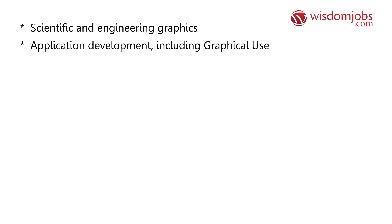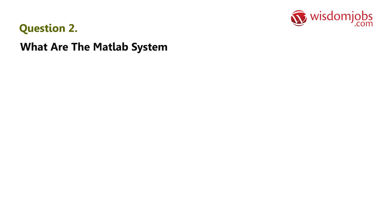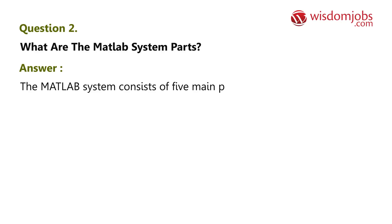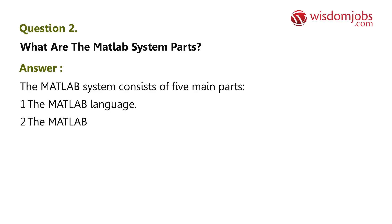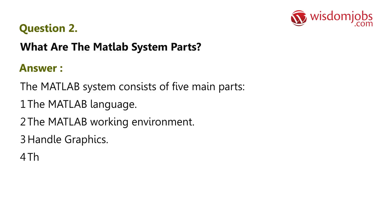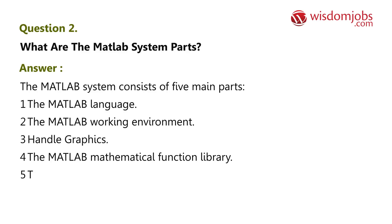Question 2: What are the MATLAB system parts? Answer: The MATLAB system consists of five main parts: 1) the MATLAB language, 2) the MATLAB working environment, 3) handle graphics, 4) the MATLAB mathematical function library, and 5) the MATLAB application program interface (API).